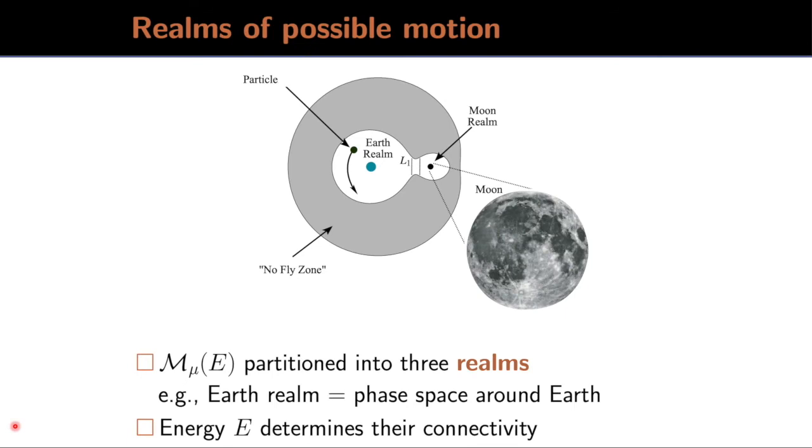We describe the connectedness of the motion in terms of realms. The energy surface is partitioned into three realms. For example, a test particle in the field of the Earth and the Moon is partitioned into an Earth realm completely around the Earth, a Moon realm completely around the Moon, and then one that's external to both of them that we call the exterior realm. And it's the energy, the Hamiltonian energy of the three-body problem that determines the connectivity.